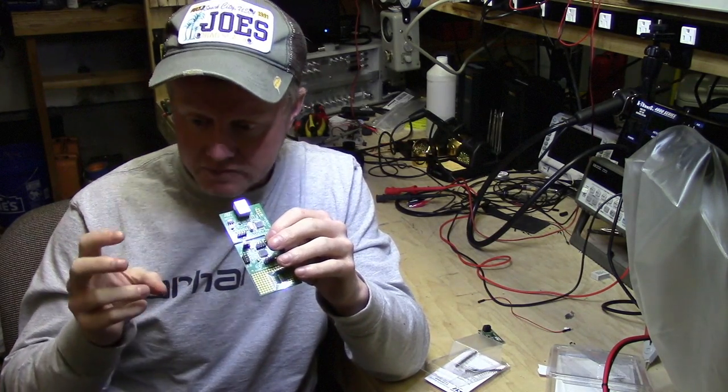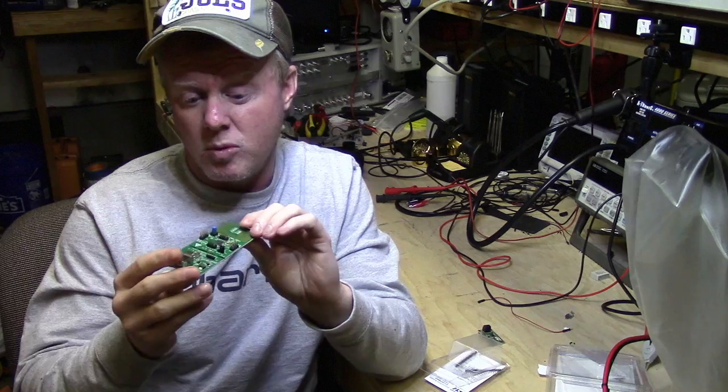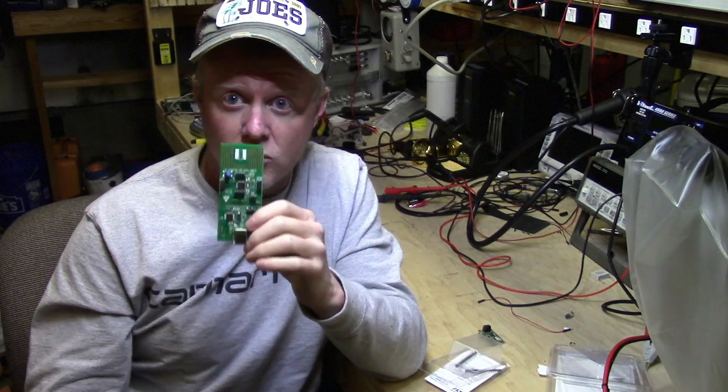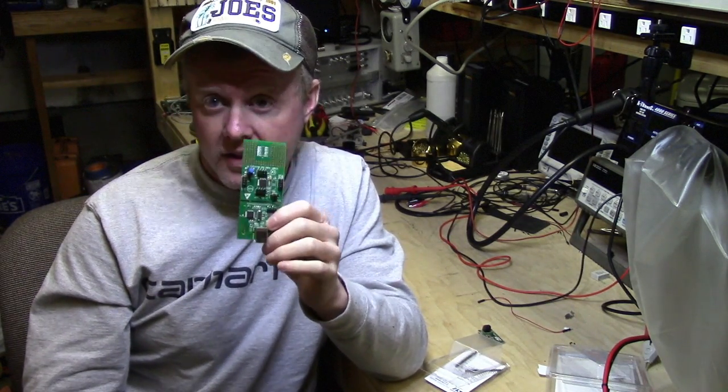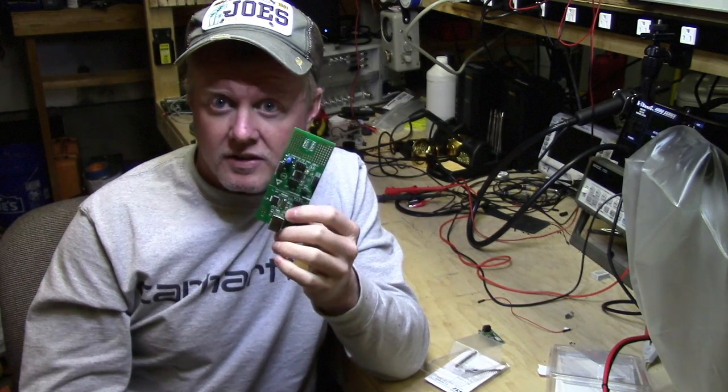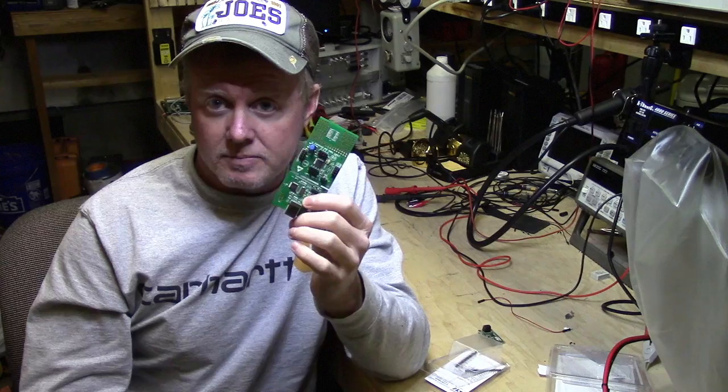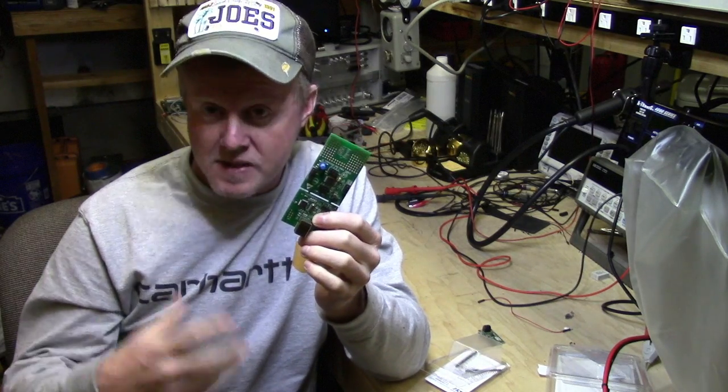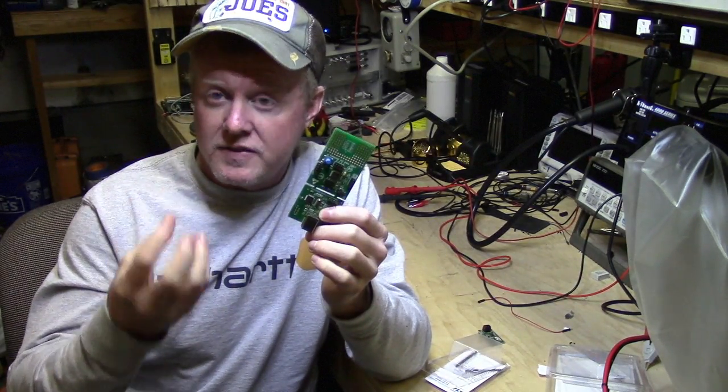A couple of things I want to do that are kind of special and neat: if this detects a problem, one thing that this does that a relay won't do other than not make any noise is this can actually tell me how much current I'm using. So I can basically set a baseline and if something goes awry, if nothing else I can at least flash the indicator that's on the switch.